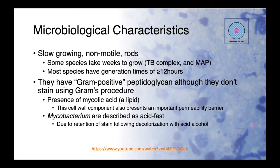The structure of the mycobacterium cell wall is such that they have a gram-positive-like peptidoglycan layer, although they don't stain using Gram's procedure. The reason for this is the presence of mycolic acid, which is a lipid in the cell wall structure, and it presents a really important permeability barrier. It repels dyes that would otherwise be able to stain the organism. The presence of this mycolic acid allows us to stain mycobacterium using a technique called acid-fast, which refers to the retention of stain following decolorization with acid alcohol.